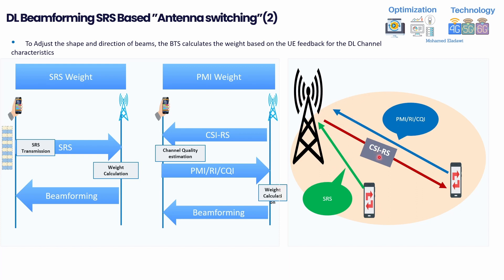The gNB can switch between SRS and CSI-RS based beamforming based on the SRS uplink SNR threshold. If the SRS uplink SNR is good, the weight calculation remains SRS-based. If it's poor, the gNB switches to codebook/CSI-RS-based beamforming. These thresholds are typically predefined or configured — check your network or vendor configuration for the current values.